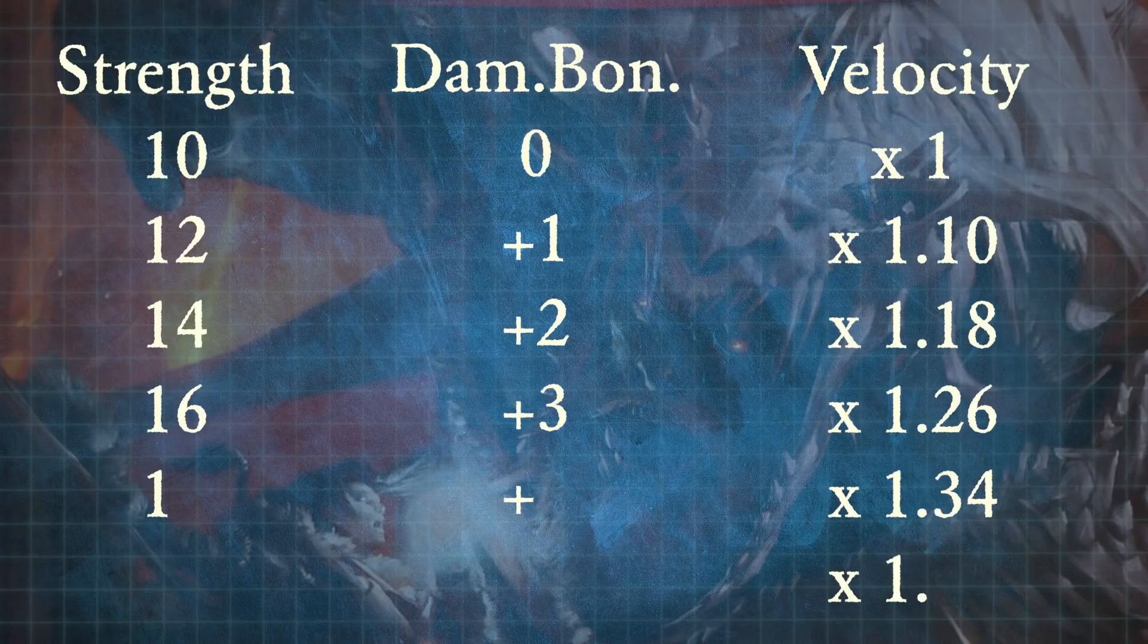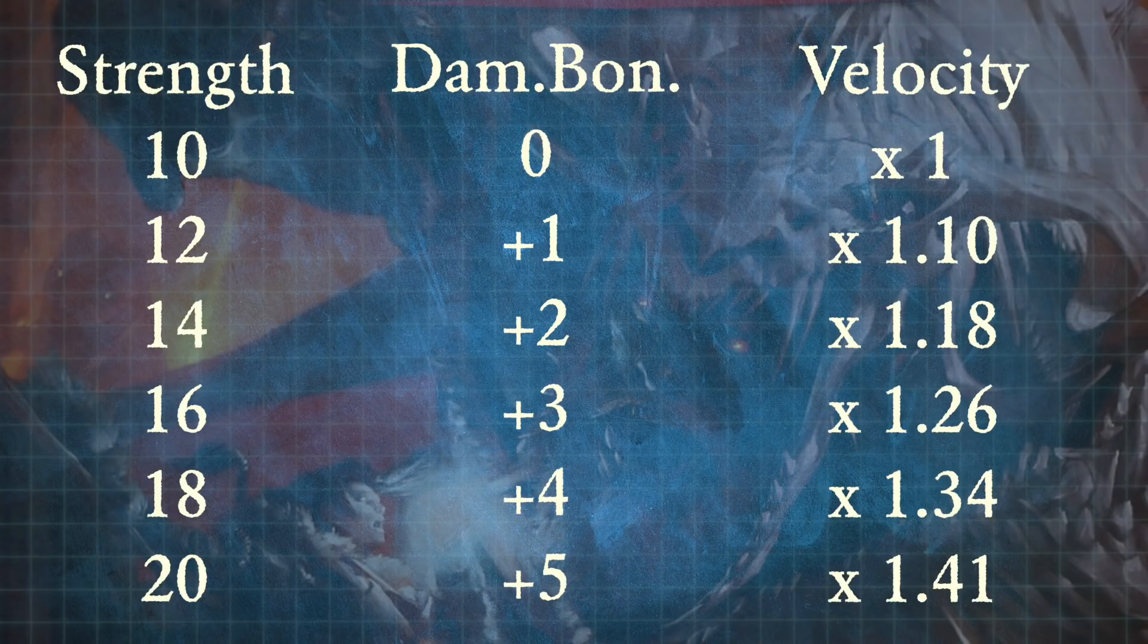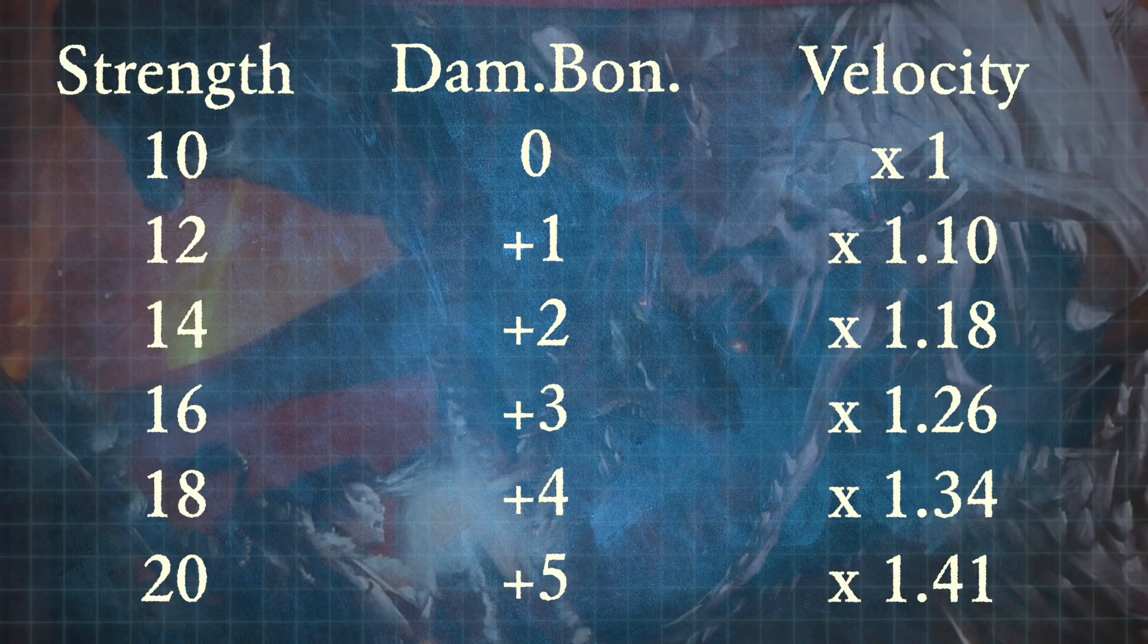So how does this translate into D&D terms? When you compare all of the 5th edition strength bonuses to their calculated Newtonian counterparts, you can see that each 1 point of strength related damage bonus corresponds to about a 10% increase in impact velocity.